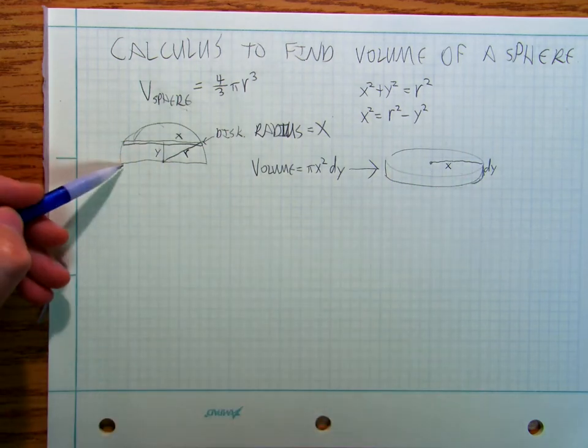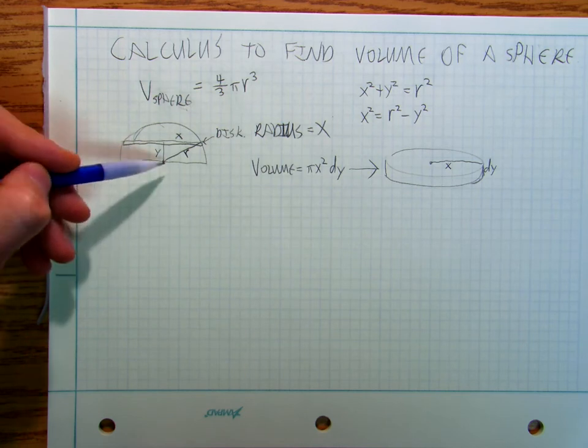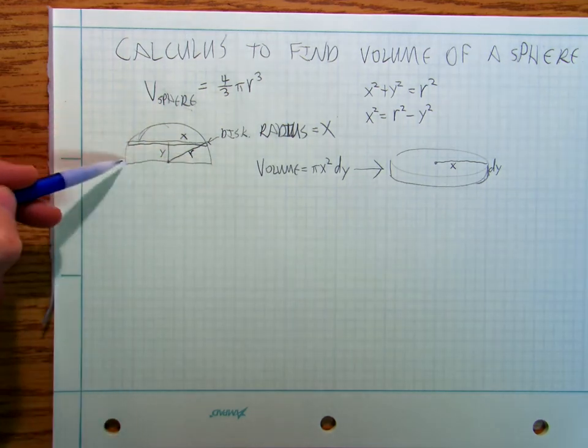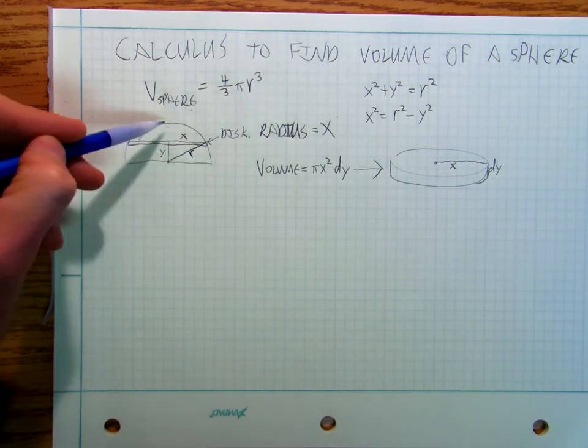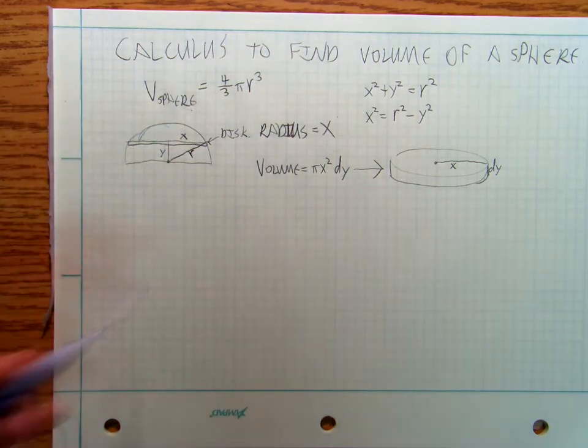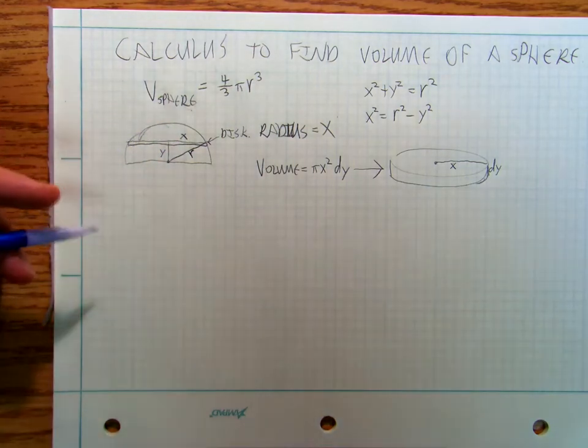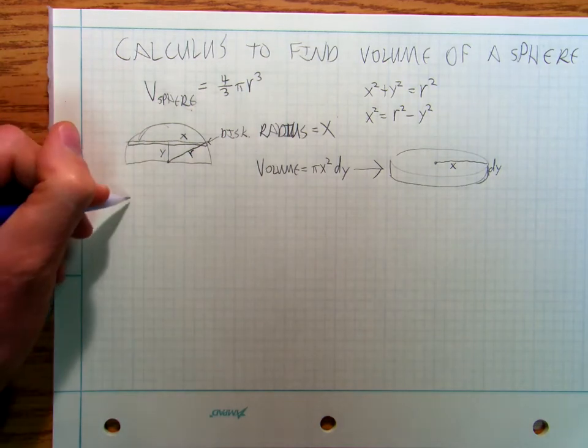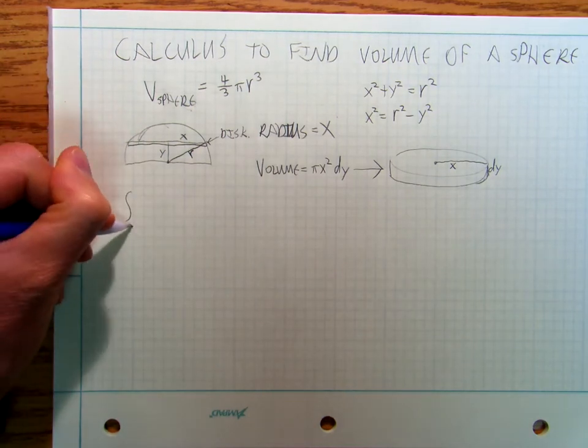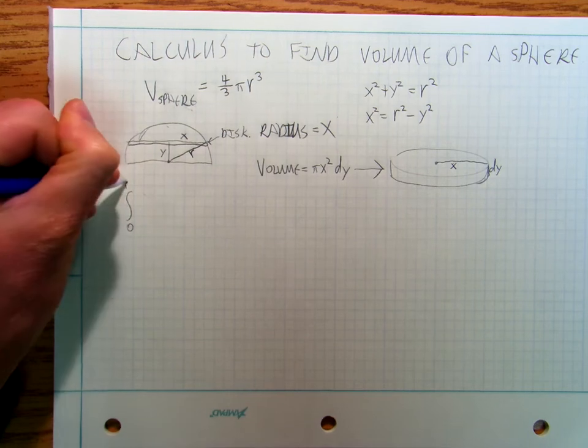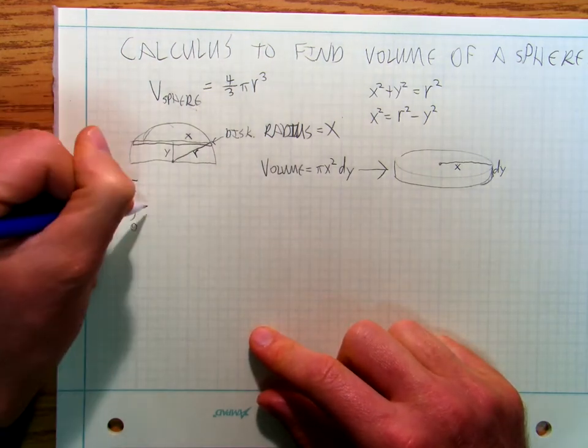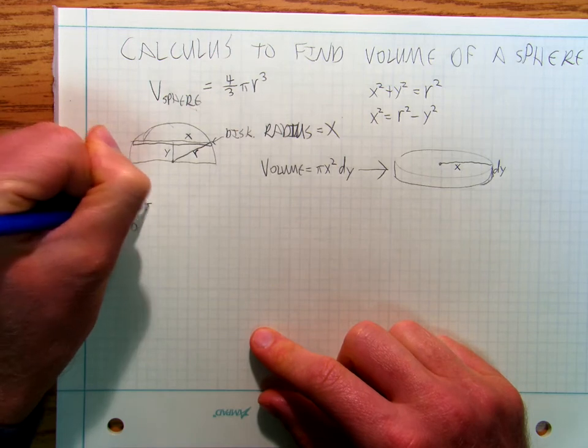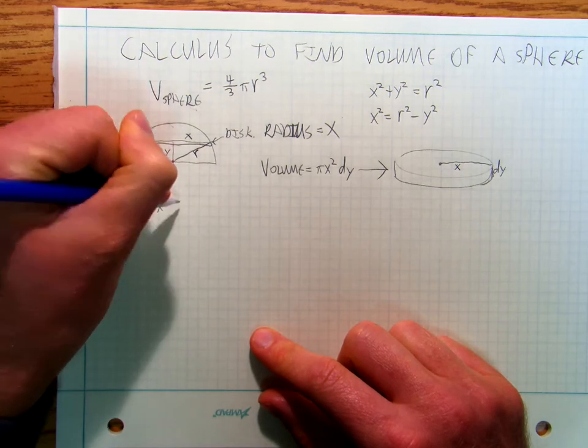Now if I want to find the area of all of the disks, so there's a disk, there's another disk, there's another disk, stacking all these little disks on top of each other, well that's what we're talking about from integration. So I'm going to integrate from zero to r of Pi x squared dy.